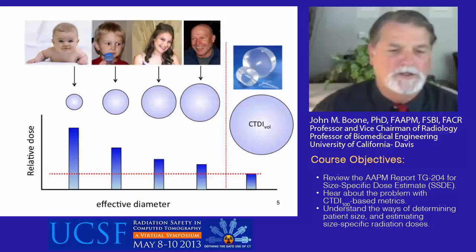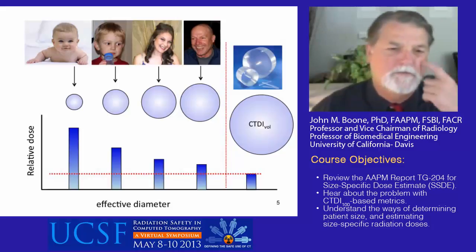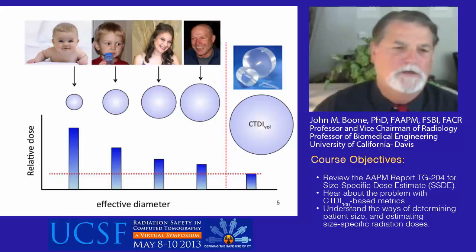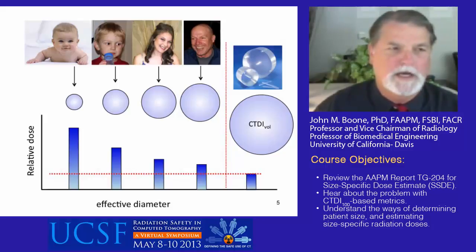Slide five further illustrates this, showing CT-CTDI vol determined at a given set of technique factors like KV, time, rotation, and mA. You can see that the relative dose as a function of effective diameter increases as the person gets smaller, or in the case of this slide, as the patient gets younger.